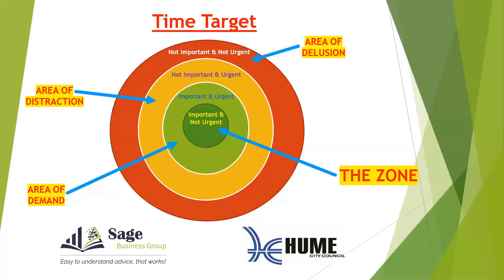On this concept of the time target, we adopt a reasonably simple way to allocate our time. We refer to this concept as the four Ds. If we're in that not important and not urgent zone, dump it. If we're in that not important but urgent zone, delegate it to someone that it is important to. If we're in the important and urgent, you've got to do it now. And finally, in the zone, if it's important but not urgent, we have time to decide when. The four Ds make it really easy to reallocate some of your time.